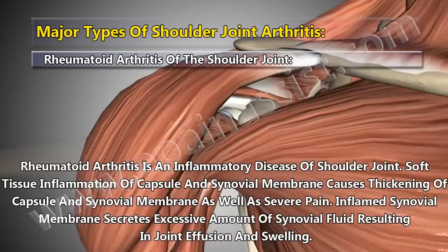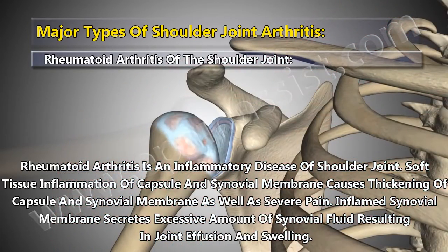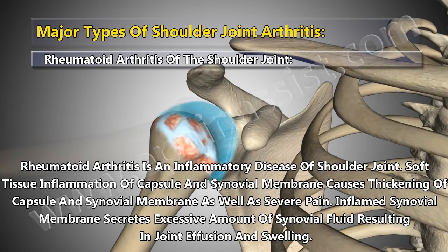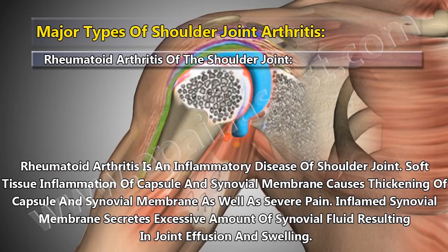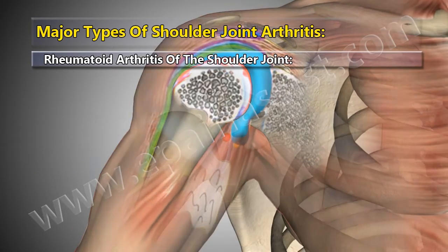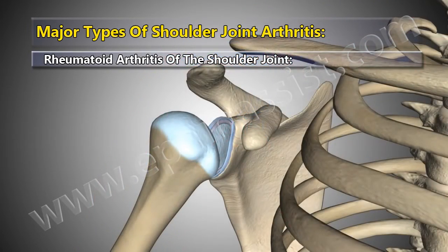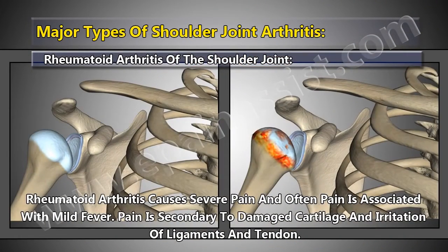Rheumatoid arthritis is an inflammatory disease of the shoulder joint. Soft tissue inflammation of the capsule and synovial membrane causes thickening of the capsule and synovial membrane as well as severe pain. The inflamed synovial membrane secretes an excessive amount of synovial fluid, resulting in joint effusion and swelling. Rheumatoid arthritis causes severe pain and often pain is associated with mild fever.